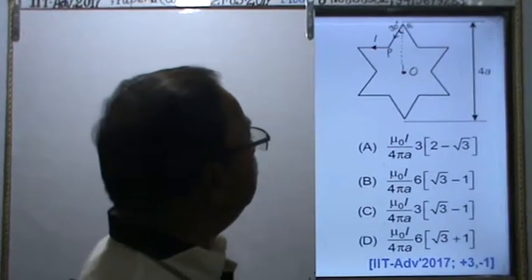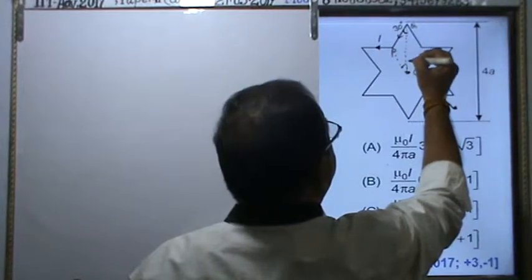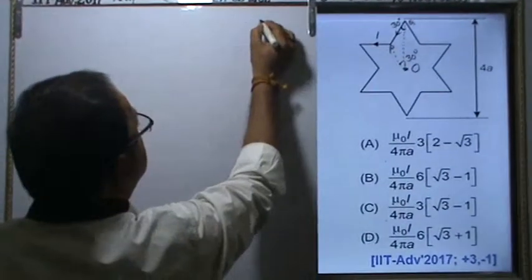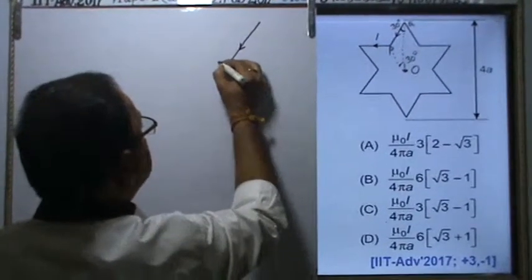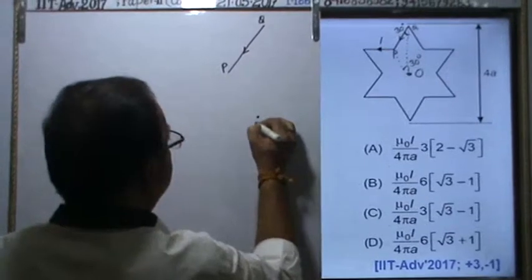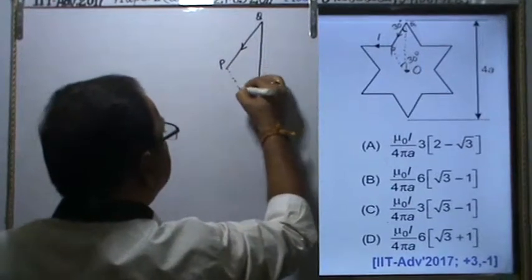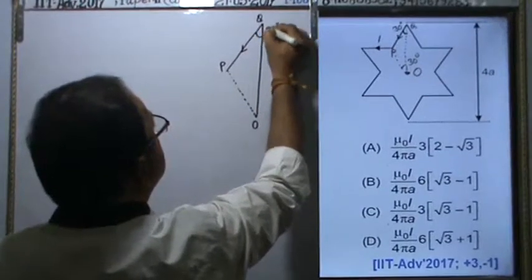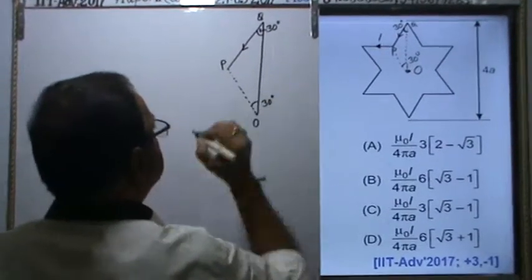By symmetry, this angle will also be 30 degrees. Let me draw PQ in a clearer configuration. Current direction is from P to Q. This point is P, and this is Q. From here, this is center O, and this angle is 30 degrees. By symmetry, this angle also equals 30 degrees.